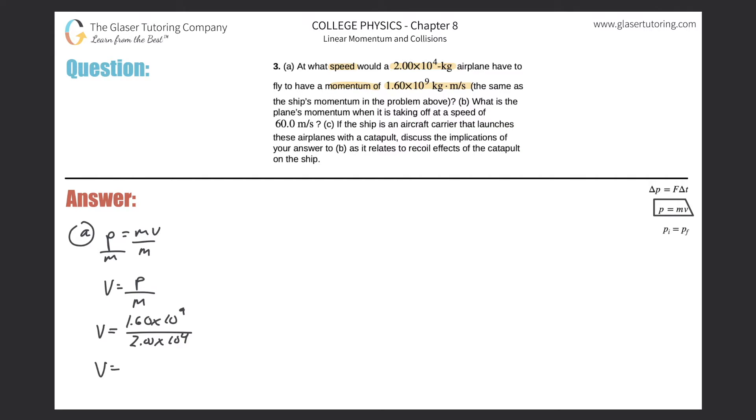And we just have to simply do the division here. So this works out to be 1.6 times 10 to the 9 divided by 2 times 10 to the 4. We get a value of about 80,000, or in other words, 8.00 times 10 to the 4th, in terms of meters per second.